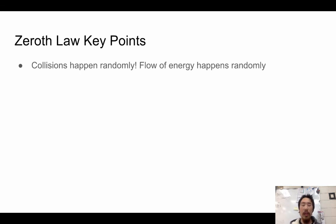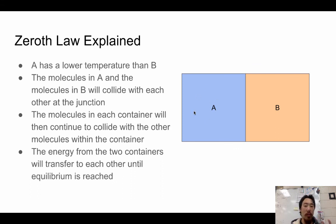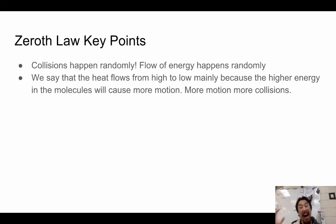Key points: collisions happen randomly — that is very important. The flow of energy also happens randomly. Even after equilibrium is reached, molecules are still colliding and still transferring energy. We say heat flows from high to low mainly because the higher energy causes more motion, resulting in more collisions — so the net energy flow will always be from high to low.